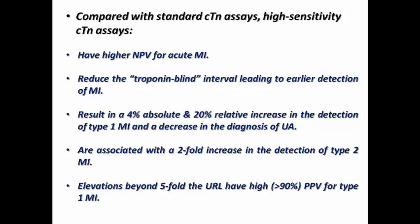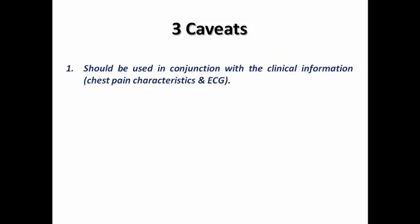That's why high-sensitivity troponin is better used in clinical practice to improve accuracy of MI detection. Regarding the advantages of troponin, we need to mention some caveats. It should be used in conjunction with clinical information regarding the character of chest pain and ECG, in order to decide whether it is significant or not. There may also be some criteria in the ACC guidelines that decide to go for urgent revascularization without waiting for troponin to rise.